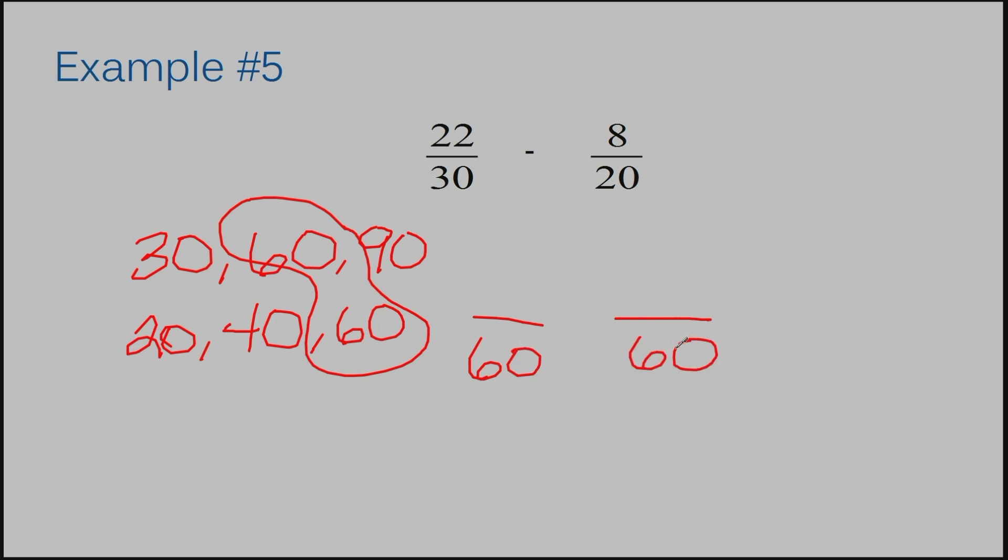Twenty times what gave me sixty? Twenty times three. So, that means I need to multiply my eight by three also. And that gives me twenty-four. I have to subtract here. Thirty times what gives me sixty? Thirty times two. So, that means I multiply my twenty-two times two as well. And gives me forty-four. Now, forty-four minus twenty-four is twenty. And sixty remains the same. My zeros cross off. And then I can simplify two-sixths and that becomes one-third.